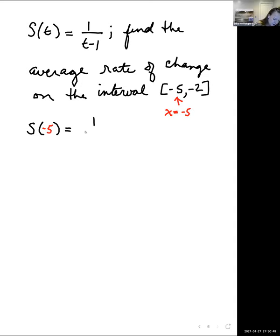This is equal to one over, I see t there, parentheses minus one. Let's put in that negative five inside that parentheses. This gives us one over negative five minus one, so one over negative six.